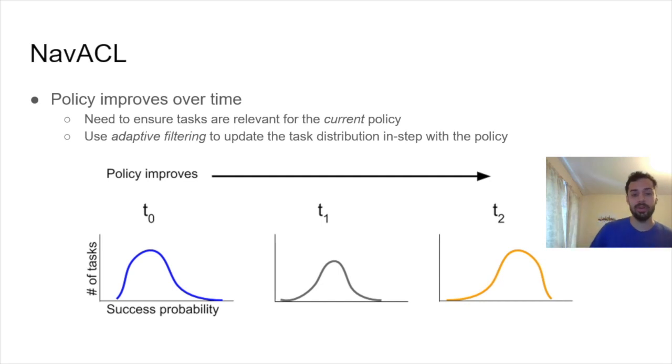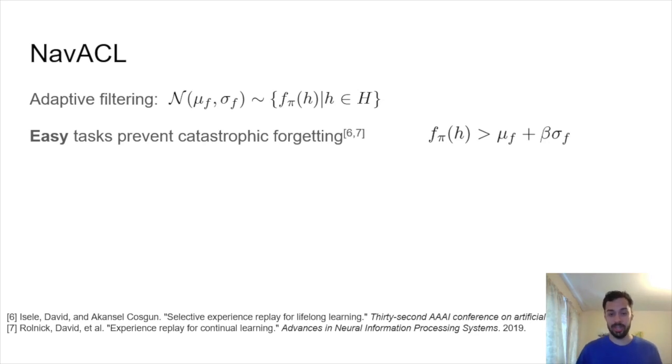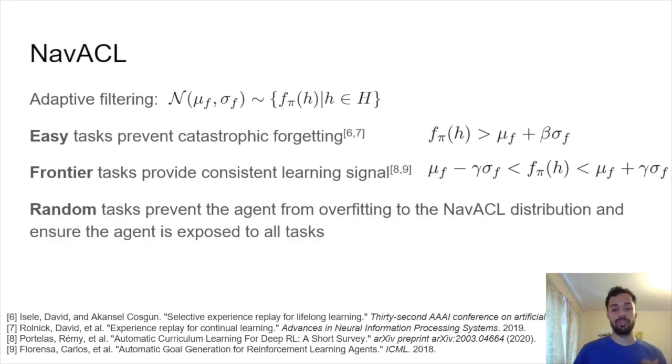Our policy improves over time and we want to ensure that the tasks we're selecting for our policy are relevant. We use something called adaptive filtering to update the task distribution in step with the policy. Here's where we define adaptive filtering. We have the set of all tasks big H. We sample tasks little h from the task space big H. We push them through our neural network and we simply fit a normal distribution to the results. Once we have our normal distribution, we can categorize our tasks. We can select easy tasks to prevent catastrophic forgetting—so this is where our task success probability is higher than the mean plus some standard deviation, so we're more likely to succeed on these tasks. Similarly, we have frontier or medium tasks to provide consistent learning signal. You can see these are bounded near the mean, so these are going to be medium difficulty tasks. And then finally, we have random tasks to ensure that our policy is not overfitting to the tasks we're generating. It also has a nice property that in the limit, we will expose our agent to all possible tasks.